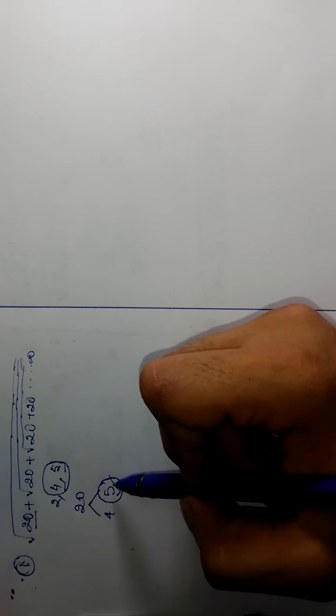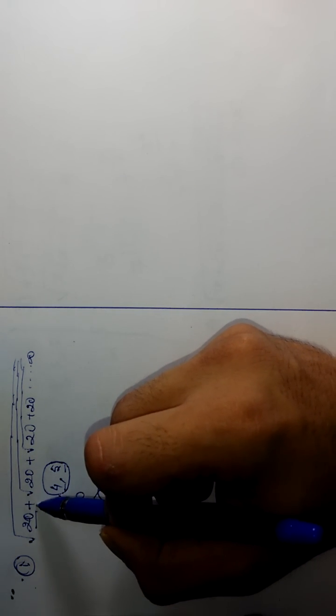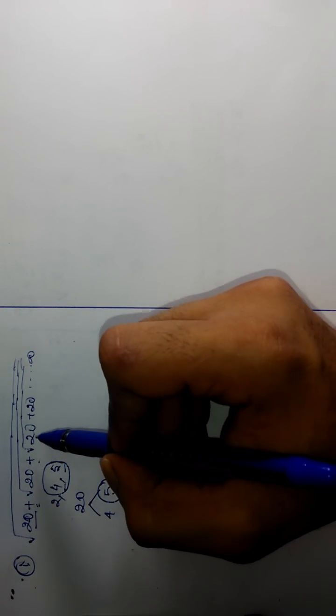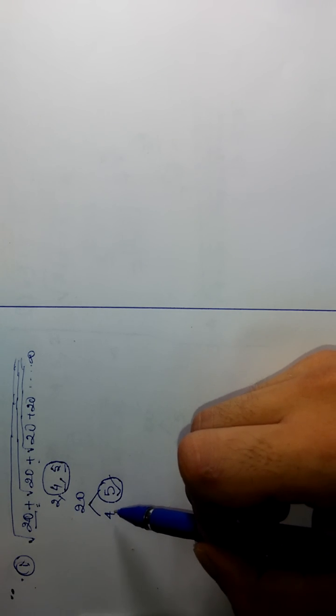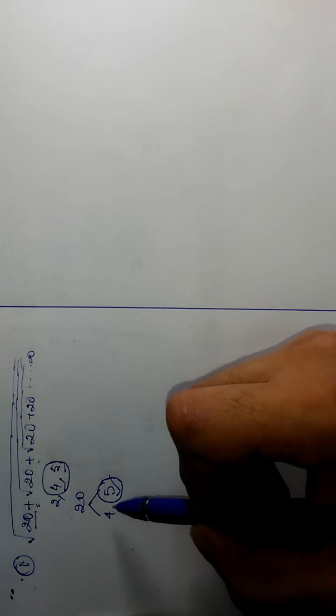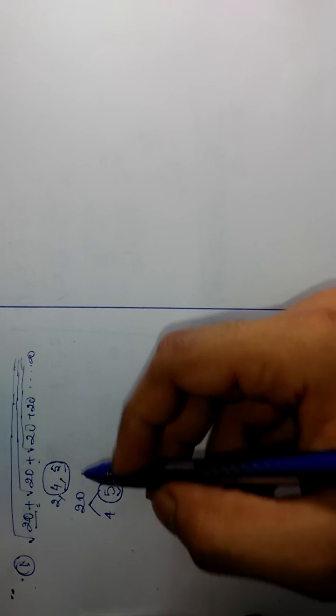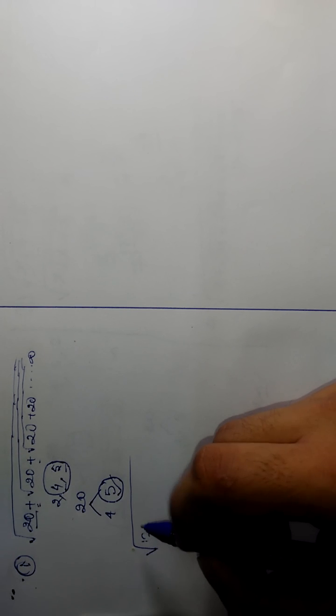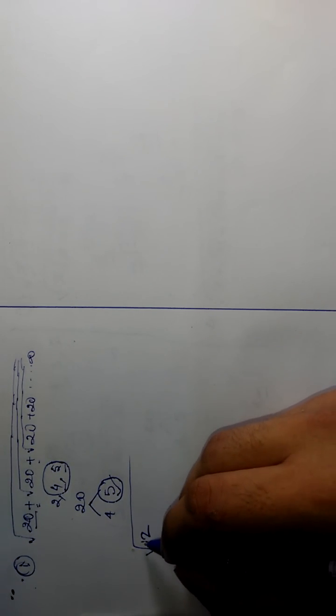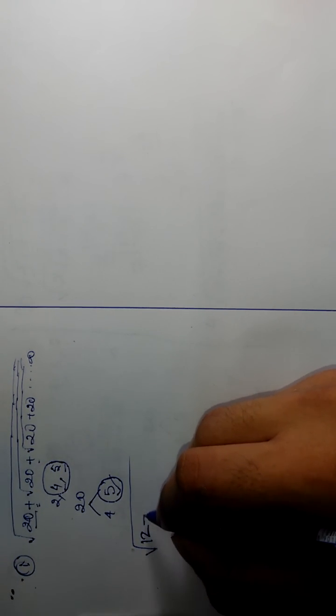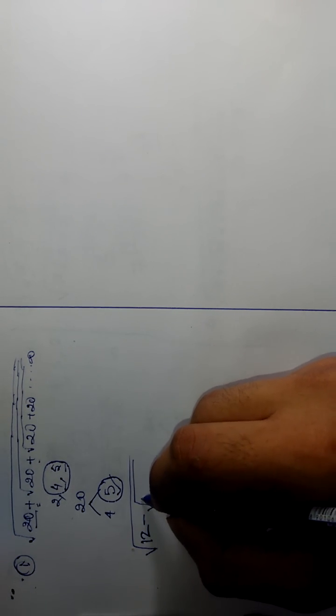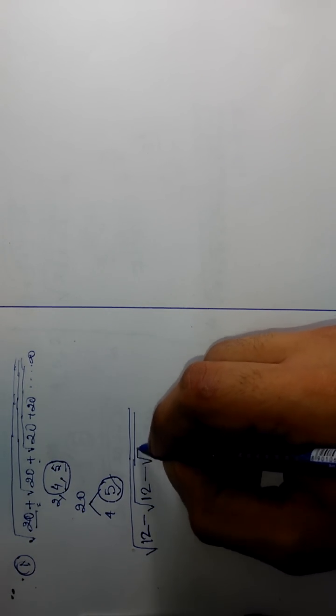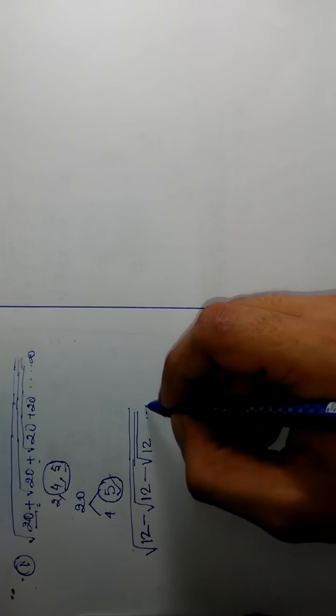Suppose there is minus in this question. Instead of plus there is minus. Then what we will do? Then we will take the smaller number. We will take another example like 12 minus root 12 minus root 12.